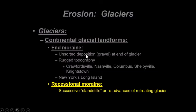So let's talk about what happens when a glacier retreats. Often what you'll see is another feature behind the end moraine — or in the case of Indiana, north of the end moraine — and that's called a recessional moraine.